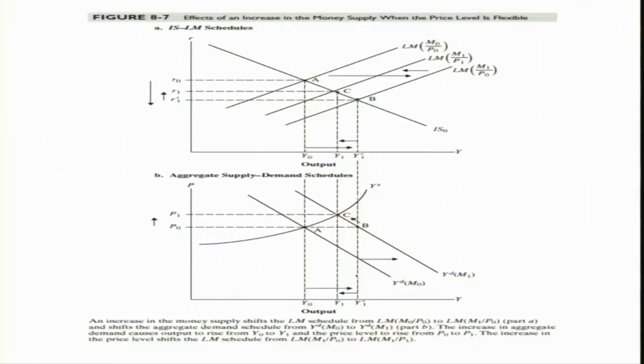Hi everyone, welcome to this session. In the previous session we derived the aggregate demand curve from the IS-LM model. In this session we will continue our discussion using this aggregate demand curve and see what happens to it when there is an increase in government expenditure — that means fiscal policy — and also due to changes in monetary policy.